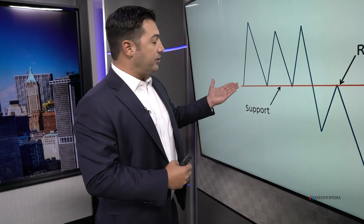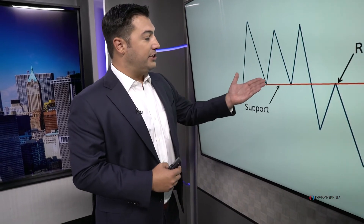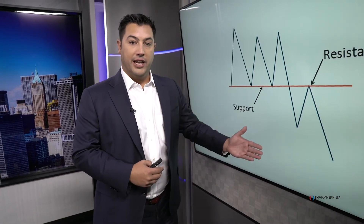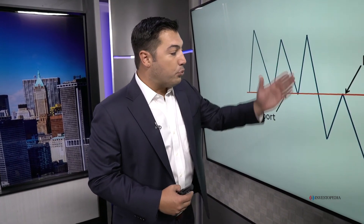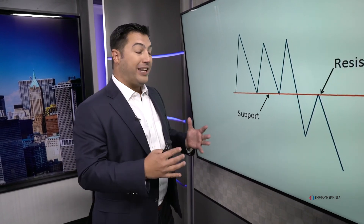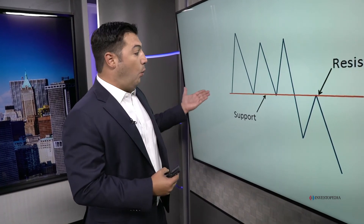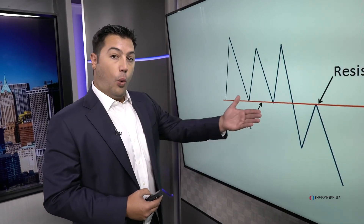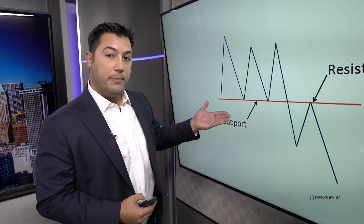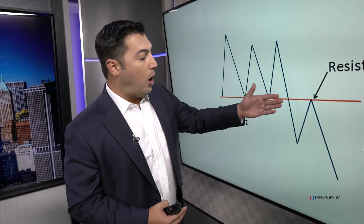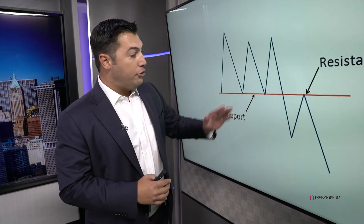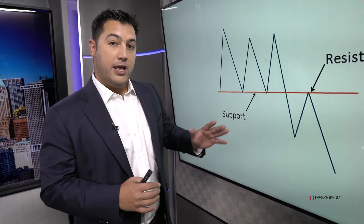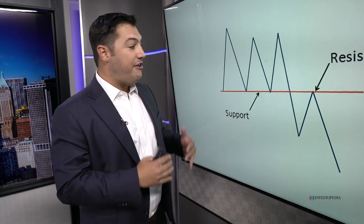Ultimately, the more times that a level is tested, the higher the likelihood that it's going to break — and eventually it does break. That breakdown below support is the market signaling to us that where there were more buyers than sellers, where there was more demand than supply, it's now the opposite. Now there's an overwhelming amount of supply relative to demand at that same level.